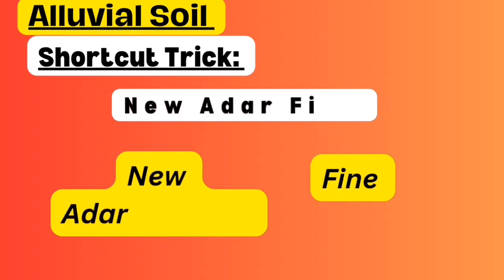Next shortcut: imagine you've lost your Aadhaar card. When you apply for a new Aadhaar card, they ask for a fine. New Aadhaar means you pay a fine. New alluvial soil is Khadar - it is fine and fertile because of the presence of kankar nodules. Kankar nodules are nothing but calcium carbonate.